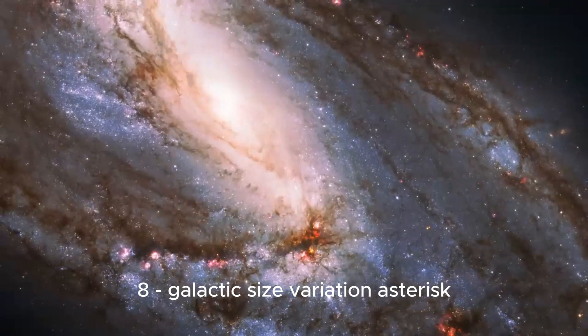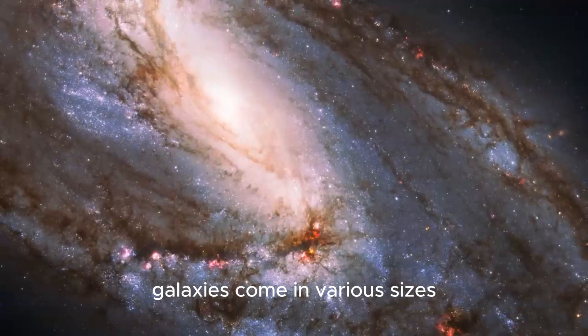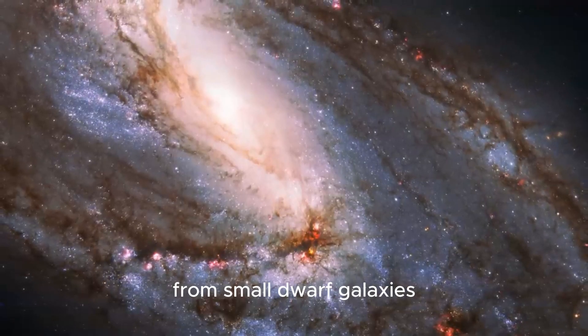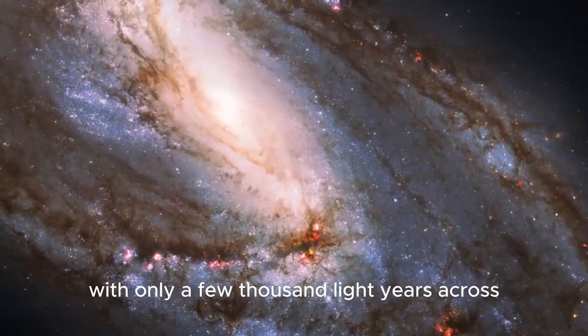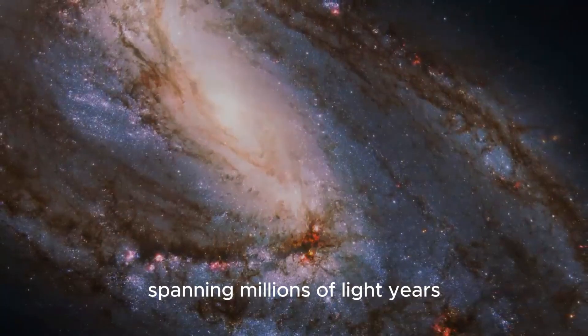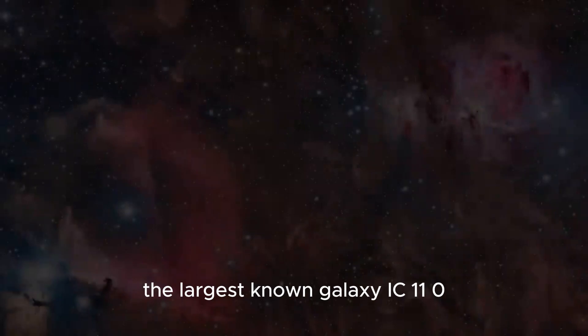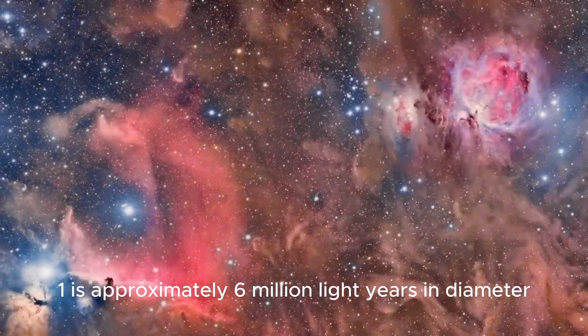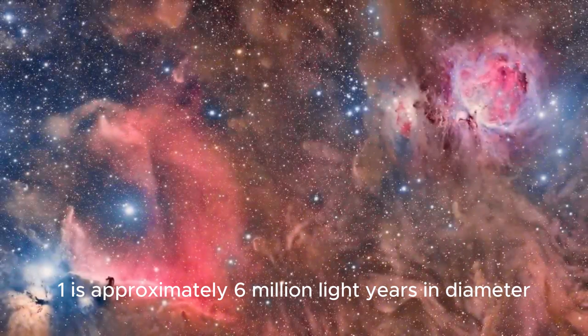8. Galactic Size Variation: Galaxies come in various sizes, from small dwarf galaxies with only a few thousand light years across to colossal galaxies spanning millions of light years. The largest known galaxy, IC 1101, is approximately 6 million light years in diameter.